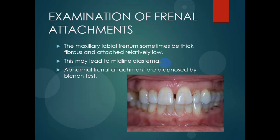Examination of frenal attachment: the maxillary labial frenum sometimes has thin fibers and is attached relatively low, so it can be stretched. This may lead to midline diastema. If the frenal attachment is abnormal, it can cause midline diastema. Abnormal frenal attachment is diagnosed by the blink test — you pull the upper lip upward and stretch it to determine whether the midline diastema is caused by the frenal attachment or some other reason. Midline diastema has other causes too, but it may also be due to frenal attachment.